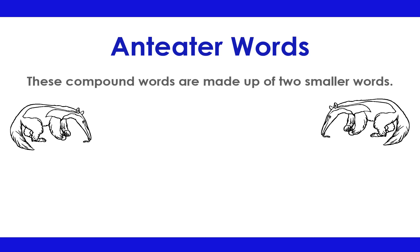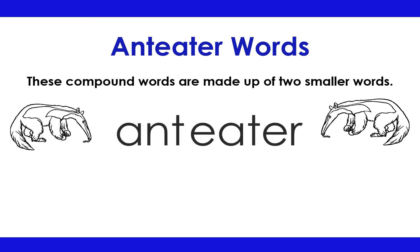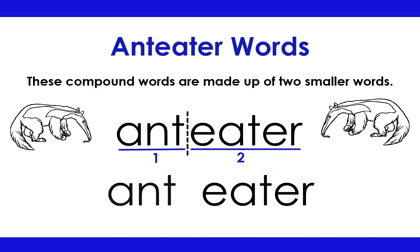Anteater Words: These compound words are made up of two smaller words. Anteater: Ant-eater. Into: In-to. Forever: For-ever. Worldwide: World-wide. Everything: Every-thing.